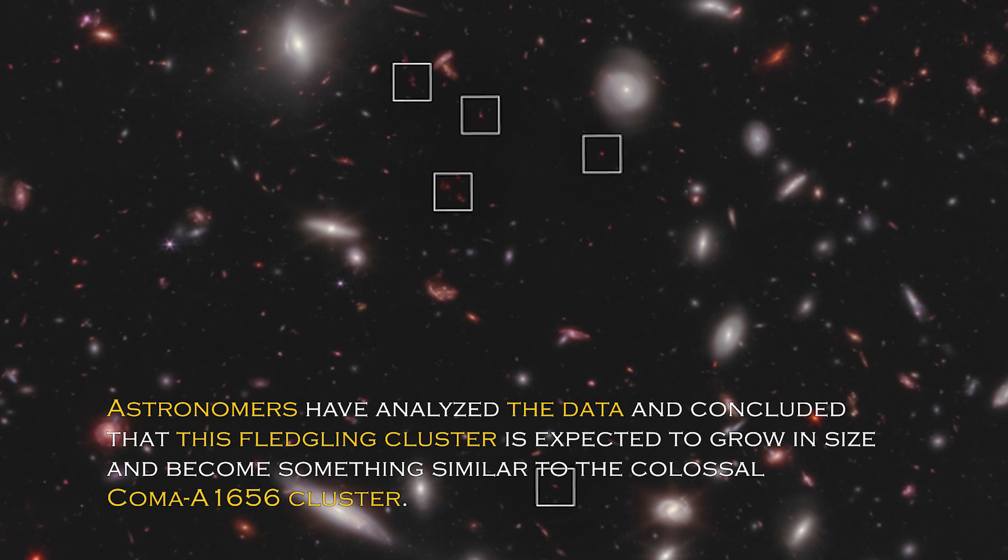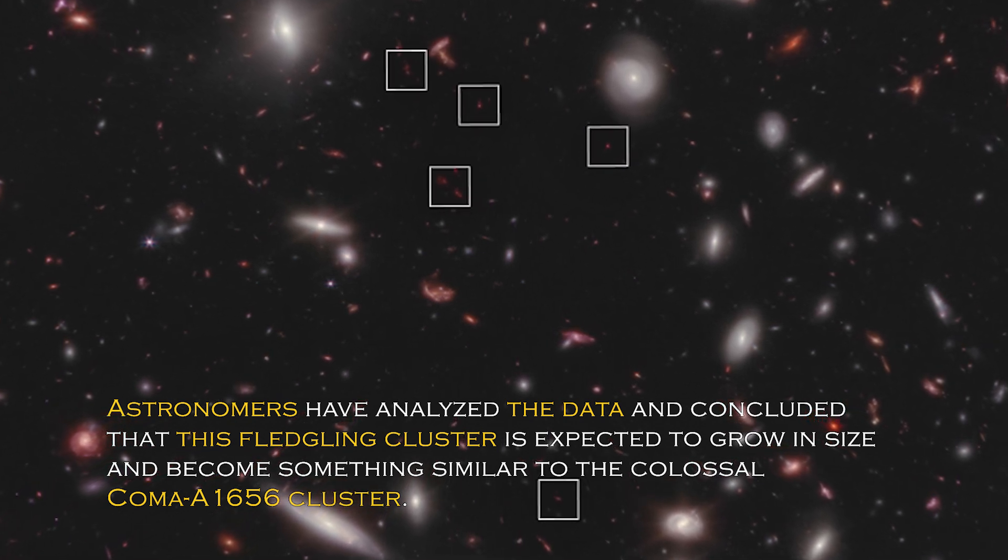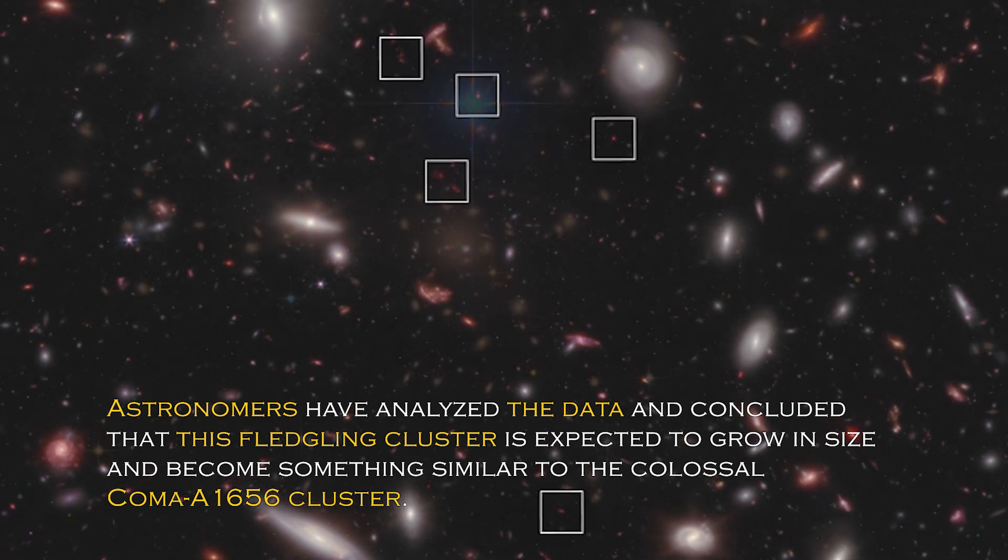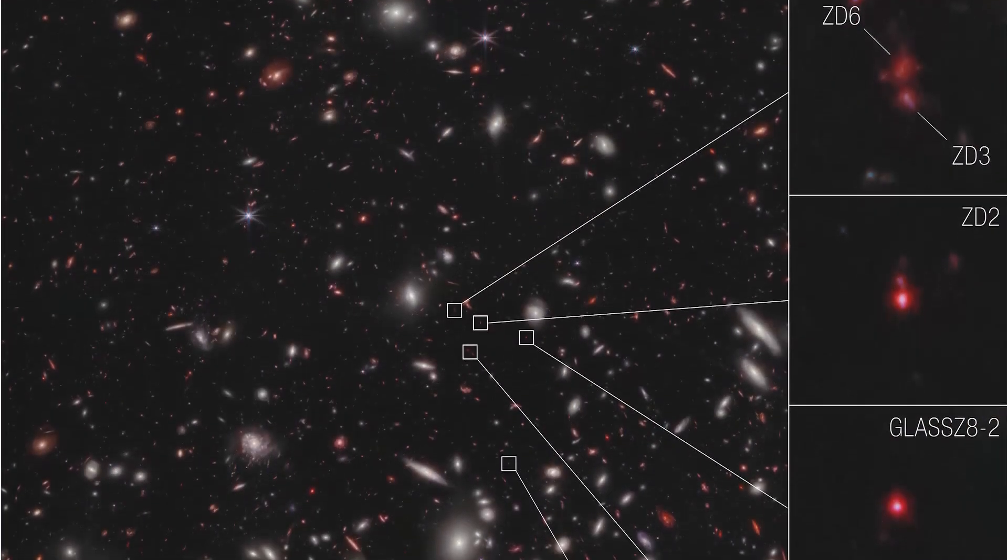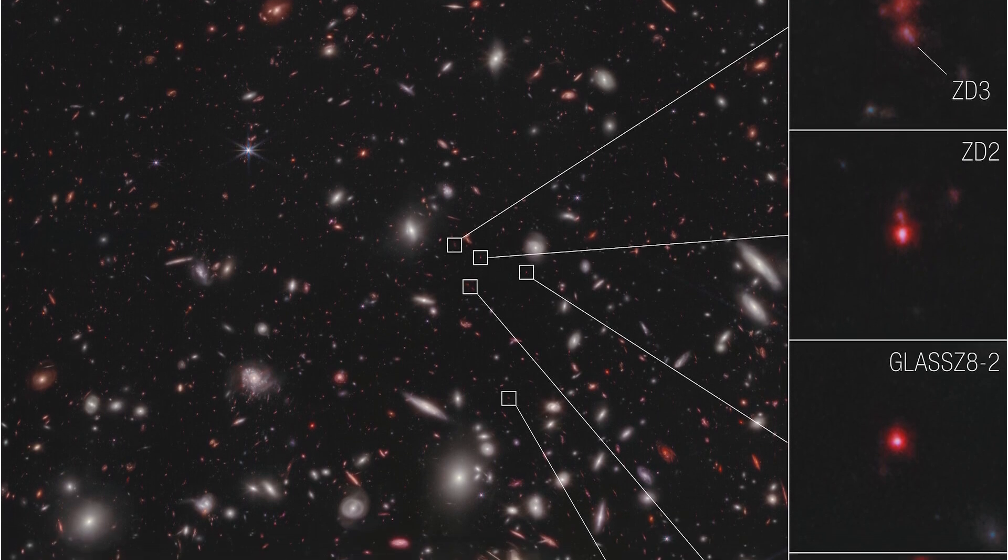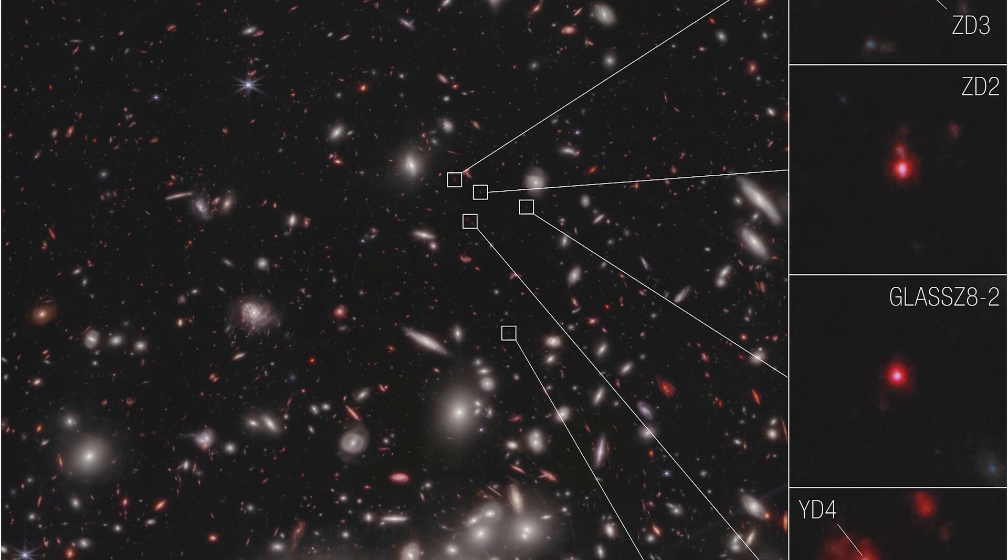Astronomers have analyzed the data and concluded that this fledgling cluster is expected to grow in size and become something similar to the colossal Coma A1656 cluster. The place where all this is taking place is unique and special, as it is in an area of accelerating galactic evolution thanks to the James Webb Space Telescope.